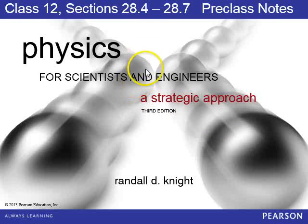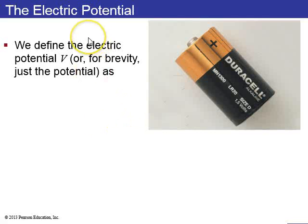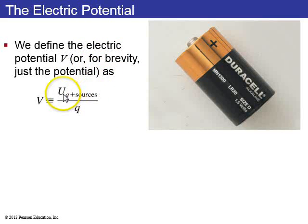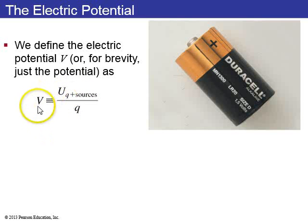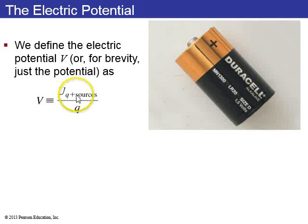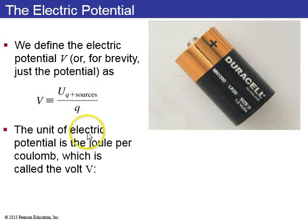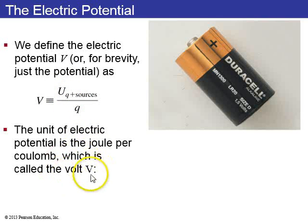Now I want to finish off chapter 28 on electric potential. Last time we really just talked about electric potential energy. Now I want to define electric potential. It comes from electric potential energy per Coulomb. The equation for electric potential — electric potential is written as V — equals U, which is the electric potential energy of Q plus whatever is the source of that electric field, divided by Q. The units of electric potential are joules per Coulomb, and that's called the volt.